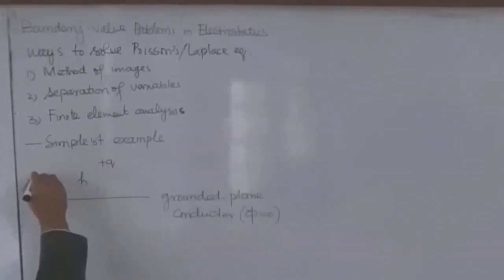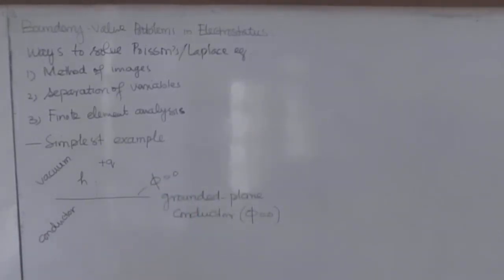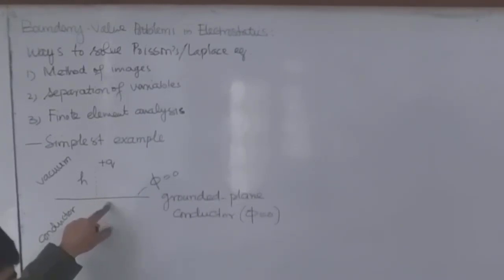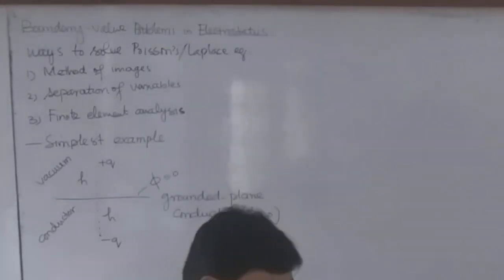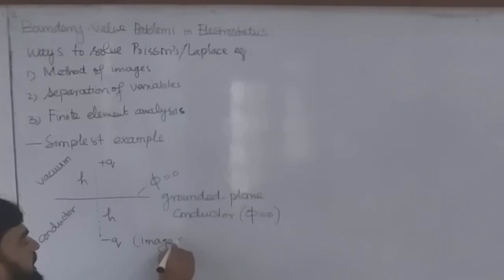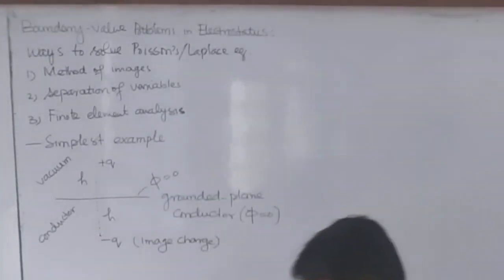On one side we have vacuum and on the other side we have the conductor. Since it is grounded, phi equals zero, but due to the charge Q, the potential on the boundary would be nonzero. To fix this, we place an image charge minus Q at the same height H on the other side of the boundary. Now on the boundary we have zero potential. The actual charge plus Q is the source charge, and minus Q is the image charge.